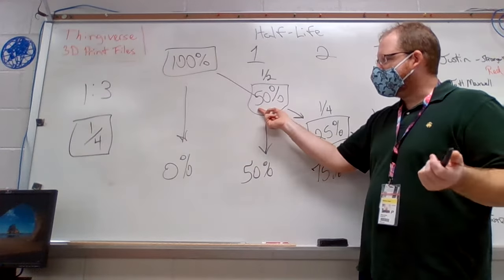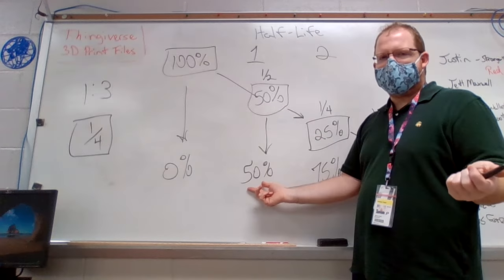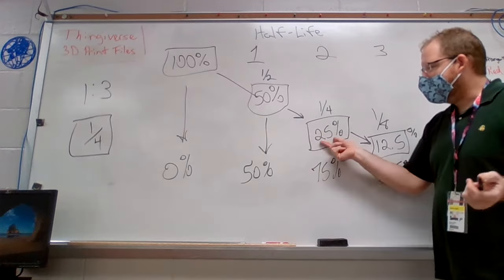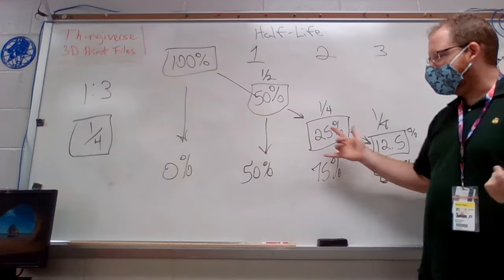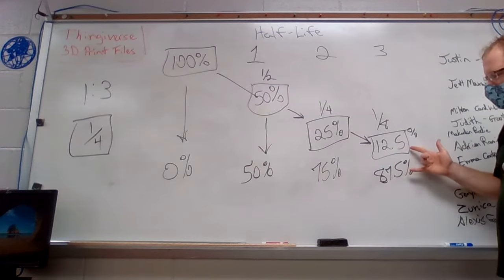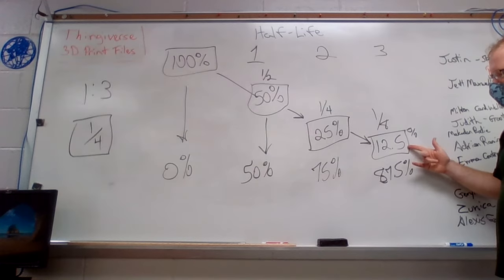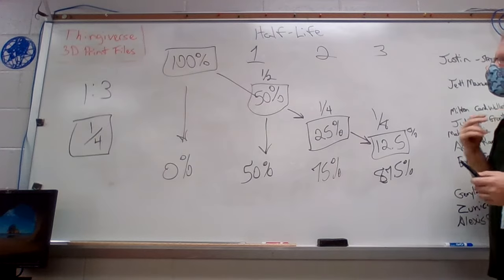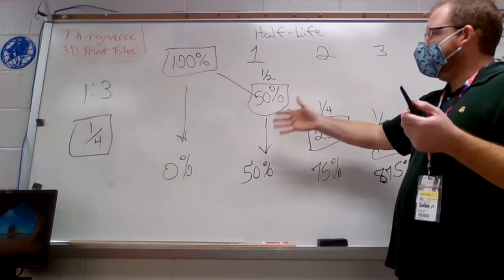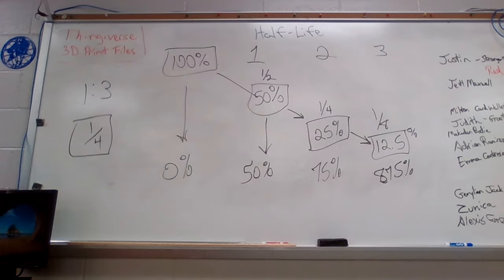But once I get down to 50% uranium, I now have 50% lead. And when I get down to 25% uranium, I have 75% lead. So see that each of these are adding up to 100%. And it gets even higher. When I get down to 12% of uranium, I have 87.5% lead. And so each of these is one half-life. And it can just keep going until it gets smaller and smaller and smaller.